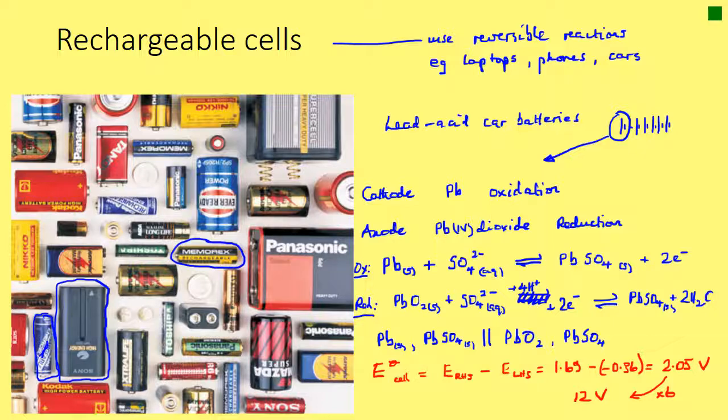Looking at some pictures, some batteries that are rechargeable look just like standard non-rechargeable ones, while others such as camcorder batteries have the word 'rechargeable' visible. Phone batteries these days are typically built inside the casing and not visible in most models.